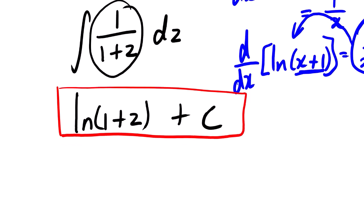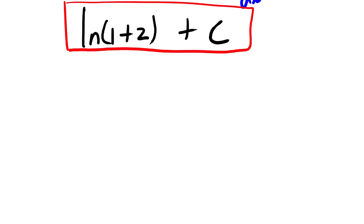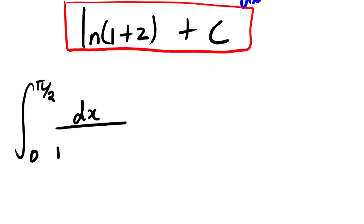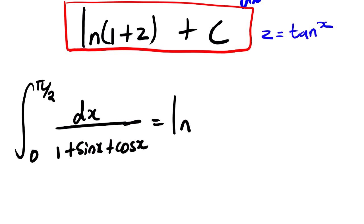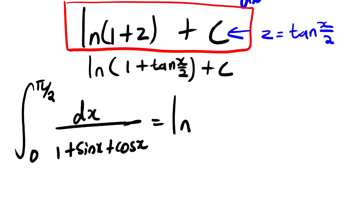The integral from 0 to pi over 2 of dx over 1 plus sin x plus cos x is equal to ln of something. But before we evaluate, remember the original identity says z is equal to tan(x over 2). So wherever we see z, we substitute tan(x over 2) plus c. This is the complete integral using Z-substitution.